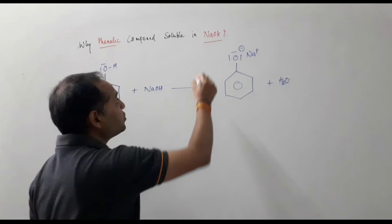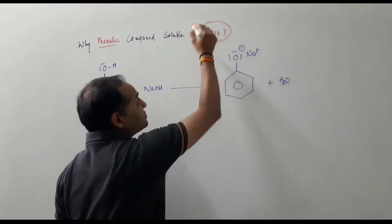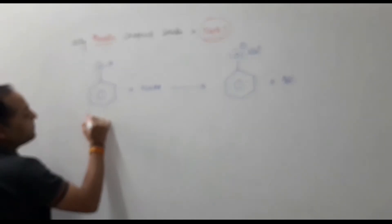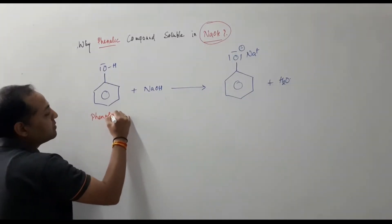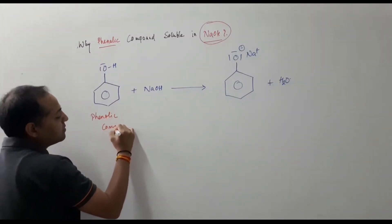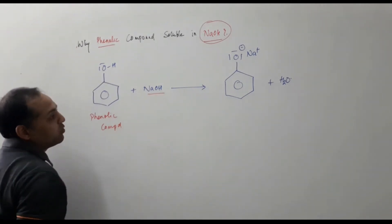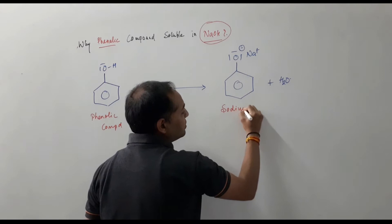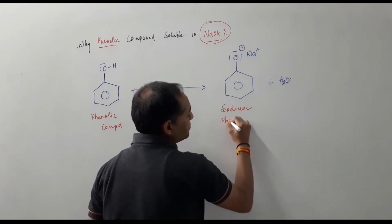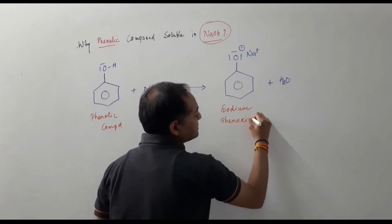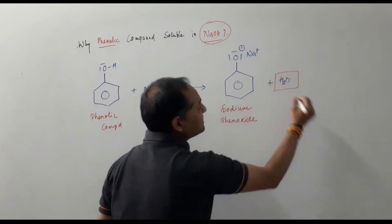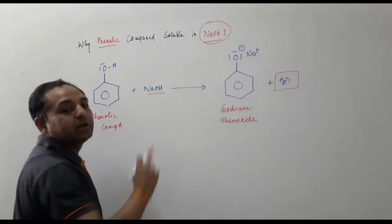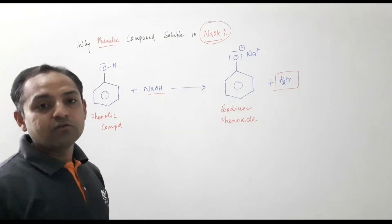For solubility purposes we have to use a strong base. NaOH is considered as a strong base. So when any phenolic compounds react with NaOH, that gives a sodium salt of the phenol, which is called sodium phenoxide and water molecule is liberated out. This is how phenol is soluble in NaOH due to salt formation.